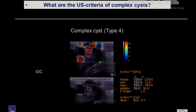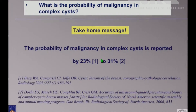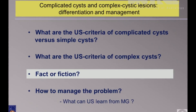Another complex cyst Type 4 with shear wave elastography: you see cystic components and solid components — very hard components compared with the cystic fluid. The take-home message: the probability of malignancy in complex cysts is reported in literature as 23% to 31%. That means if you have a complex cyst, you can't follow it — this is definitely no BIRADS 3 situation. You have to go for histology to clarify what the pathology is.